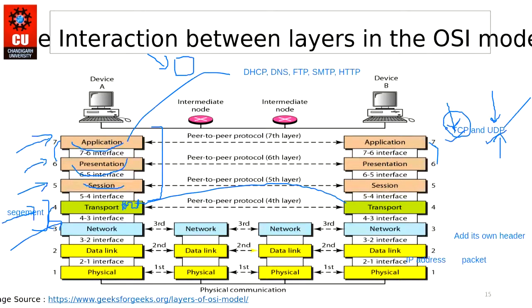Routing protocols like RIP, OSPF, and EIGRP run at the Network layer. We will discuss the administrative distance of each routing protocol, hop count, and the metrics we need to take care of in a later section. Right now we just need to focus on the OSI model and the different protocols running at each layer.